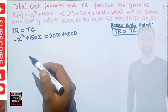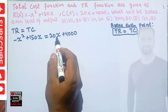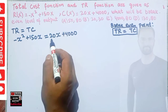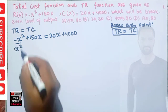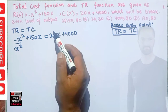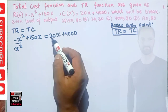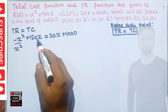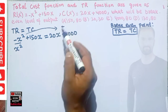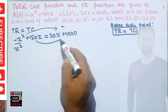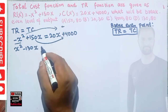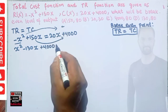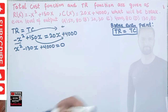Solving this, we transpose terms. Taking minus x squared to the right-hand side gives us plus x squared. Then 150x minus 20x gives 130x, and taking it to the other side gives minus 130x. So we have x squared minus 130x plus 4000 equals zero — a quadratic equation.